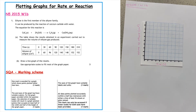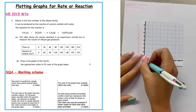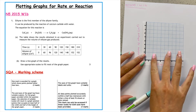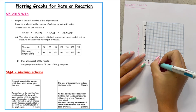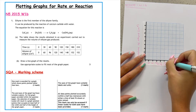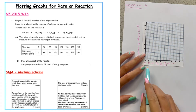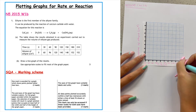Next we need an appropriate scale. Looking at time, it goes up consistently — start at zero then go up in 30s: 0, 30, 60, 90, 120, 150, 180, 210, and we can extend to 240 and 270.